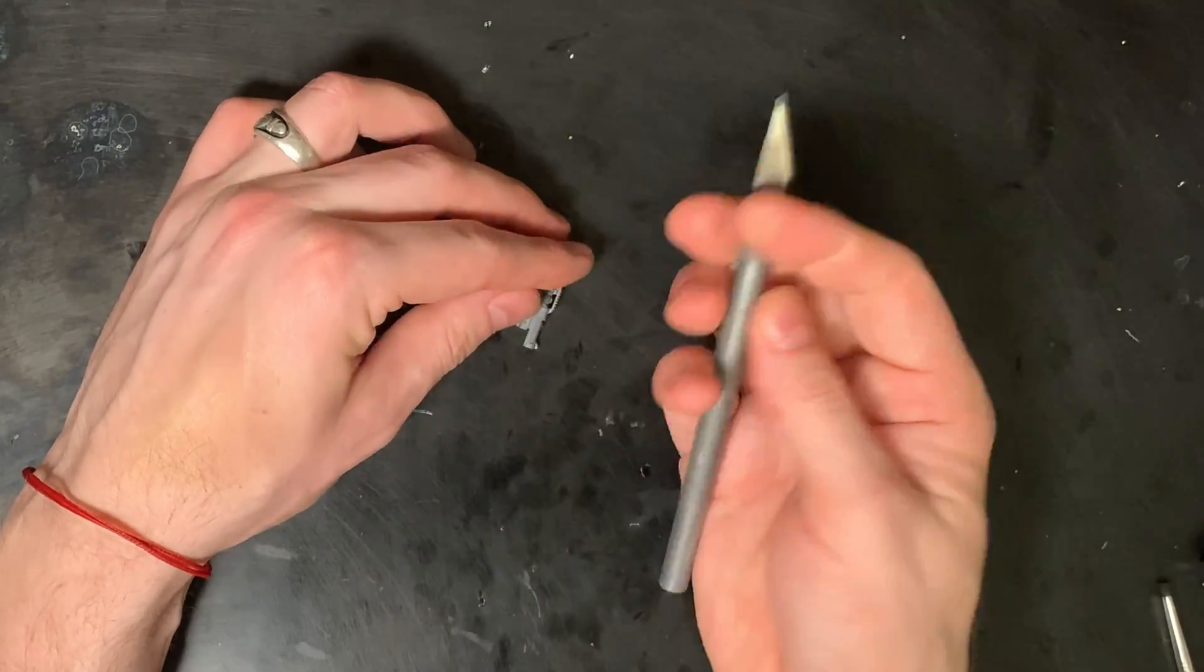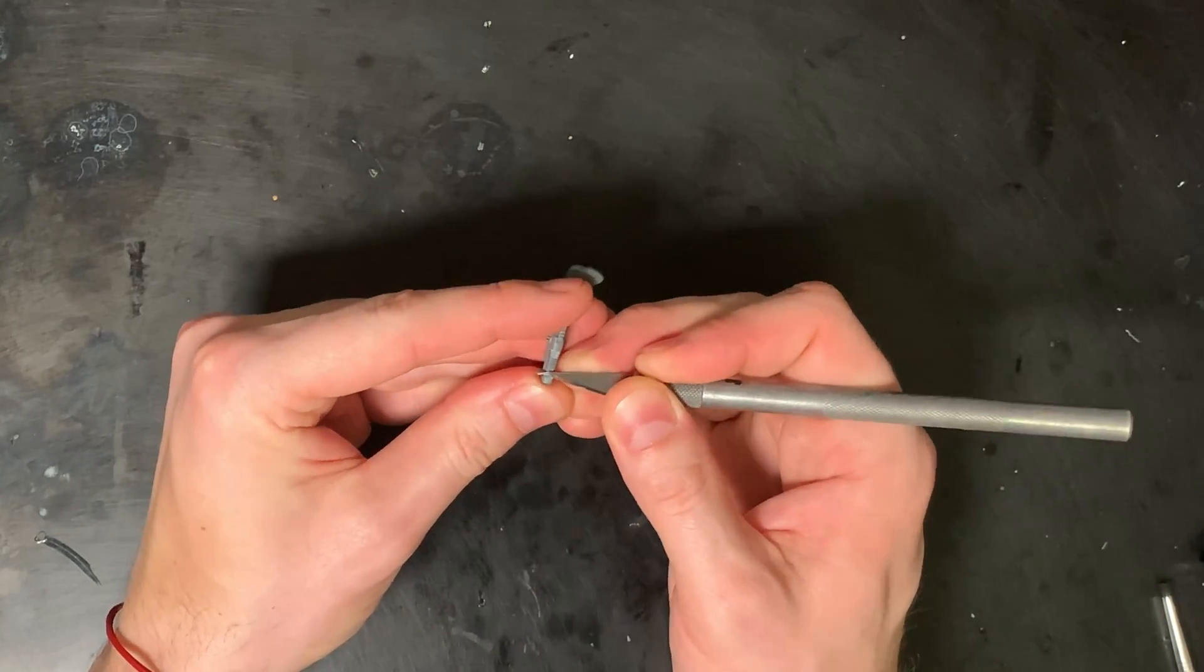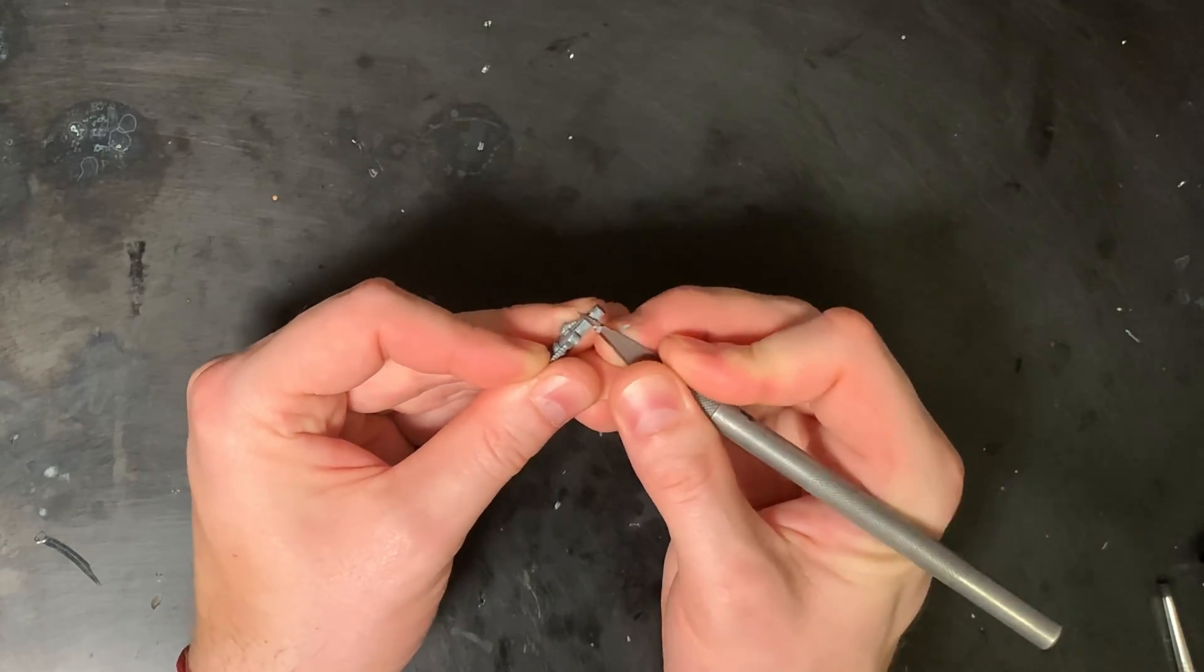The way to really get this done is take a lot of light cuts with a really sharp blade. I'm just gonna go slow. I'm gonna keep trial fitting with the plasma coil and I'm just gonna be as careful as I can.